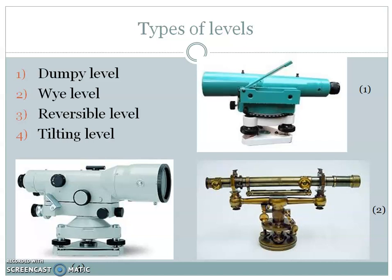A Y level and a tilting level are also available. I don't have a photograph of the reversible level — you can refer to it online. I want you all to study what is the Y level, reversible level, and tilting level. It is in the Surveying One textbook by B.C. Punmia, starting from page number 197. You can read and make your own notes. We will be studying the dumpy level in detail.